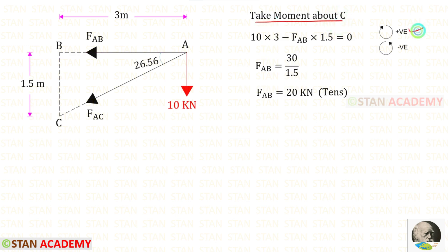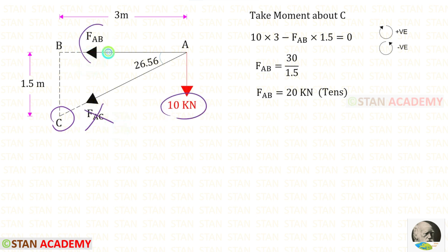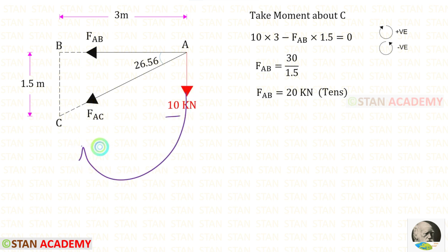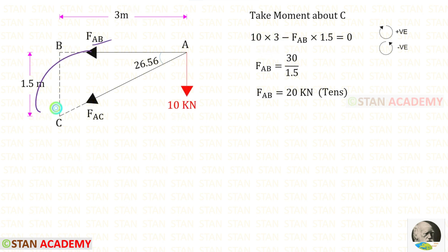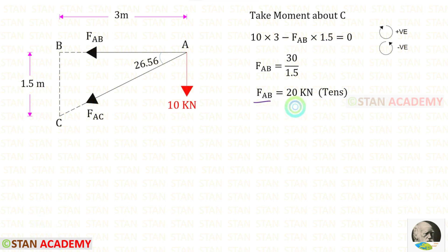Let us take moment about C. We keep clockwise as positive and anti-clockwise as negative. When we take moment about C, we should not consider FAC. The remaining forces are 10 and FAB. The force 10 is acting in the clockwise direction, so it will be positive, and the distance is 3. FAB is acting in the anti-clockwise direction, so it will be negative, and the distance is 1.5.